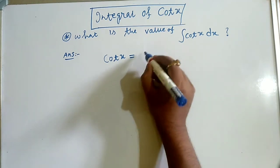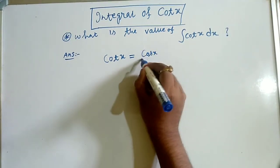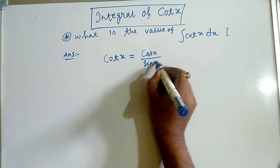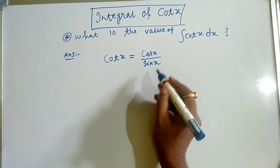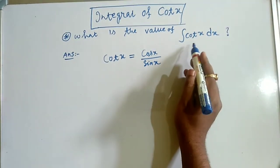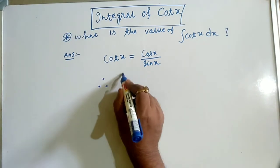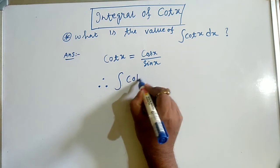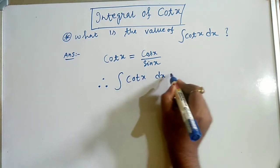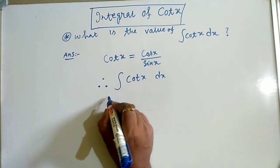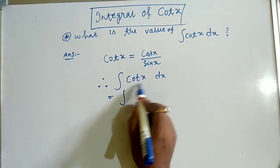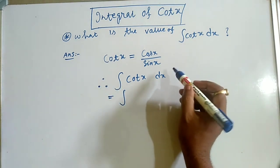You know that cot(x) is the ratio of cos(x) over sin(x), so let us use this value in this integration problem. Our problem is the integral of cot(x) dx, which equals the integral of what is cot(x) as we have already written.